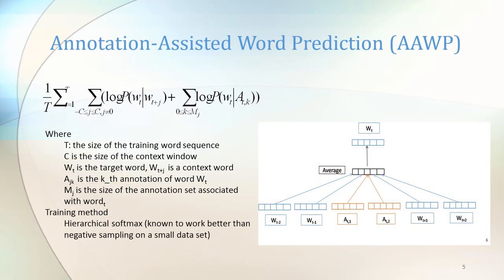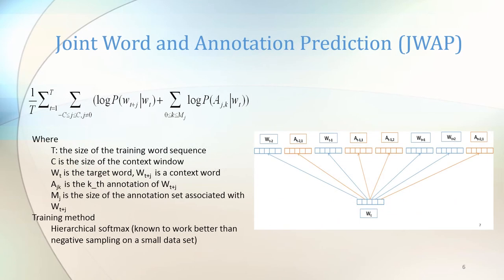Our first model is the annotation assisted word prediction model. In this model, context words and the annotations of a target word are used to predict the target word. Our second model is the joint word and annotation prediction model. In this model, a target word is used to predict the context words and the annotations as a set with context words.